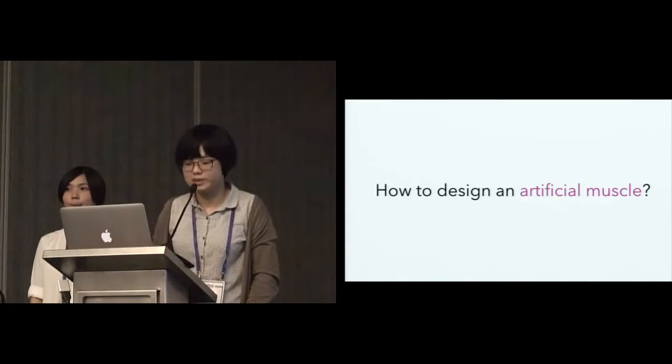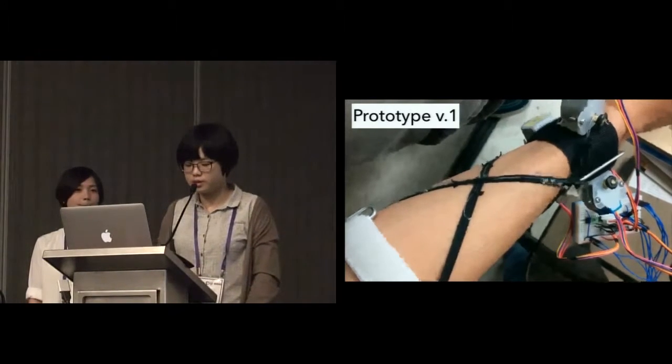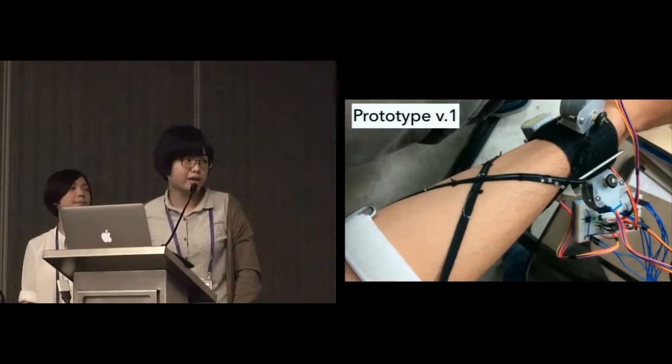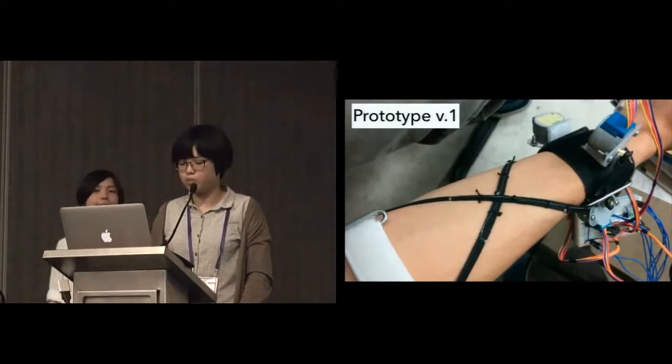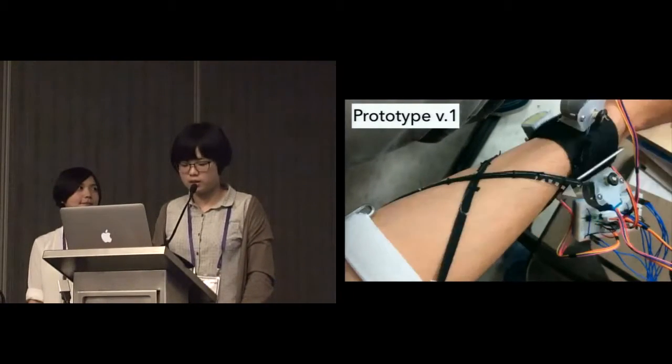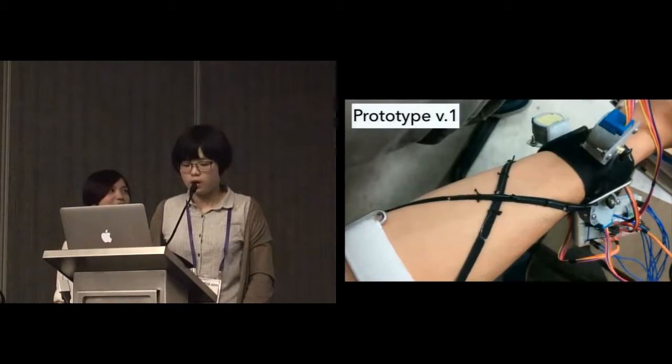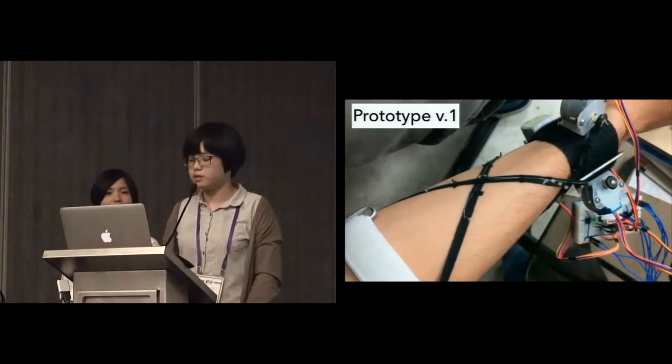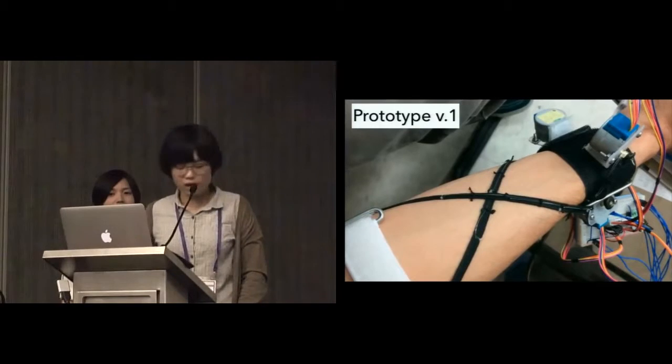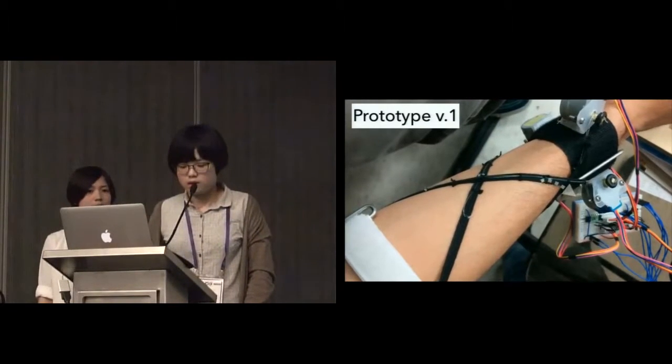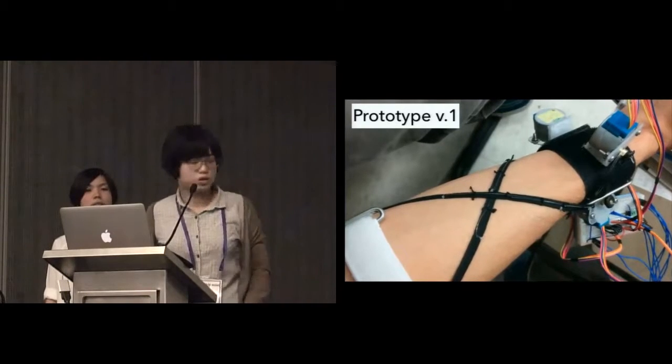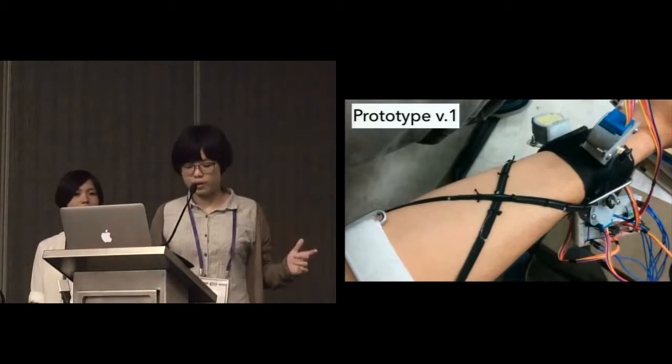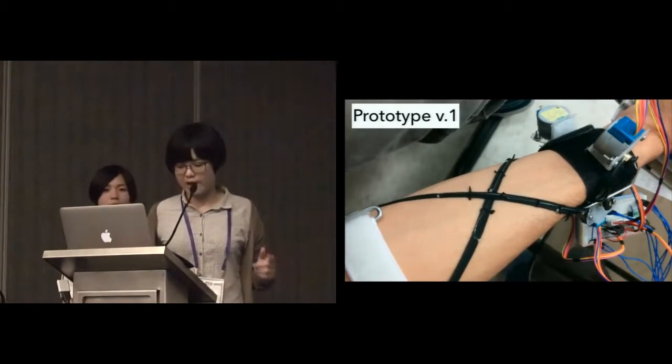How to design an artificial muscle? This is an earlier prototype. We apply the elastic band connecting to the fishing line as an artificial muscle. Each artificial muscle simulates a real human muscle. We conducted preliminary studies by this prototype and found that the reaction time is quite long. At the beginning, the user just moved a bit. The user didn't feel the pulling sensation until the artificial muscles become tighter.